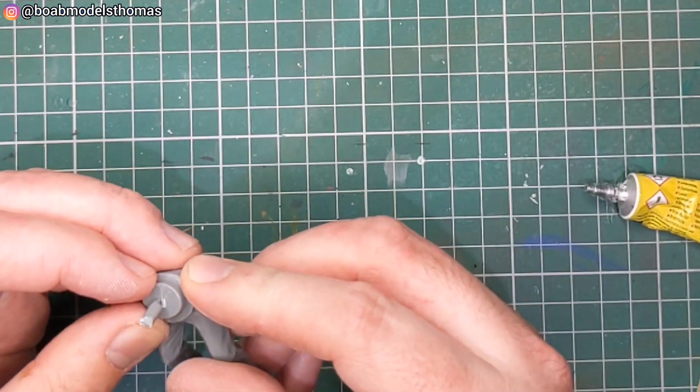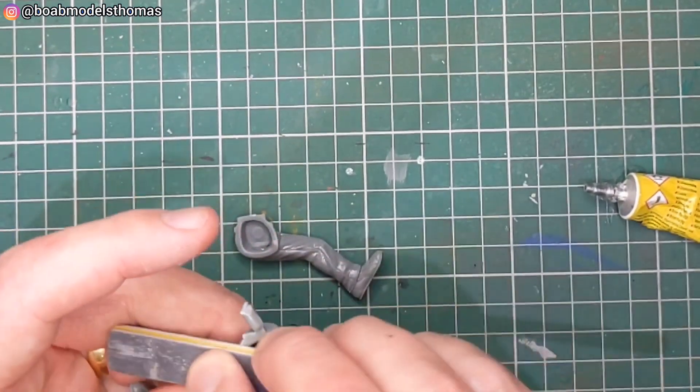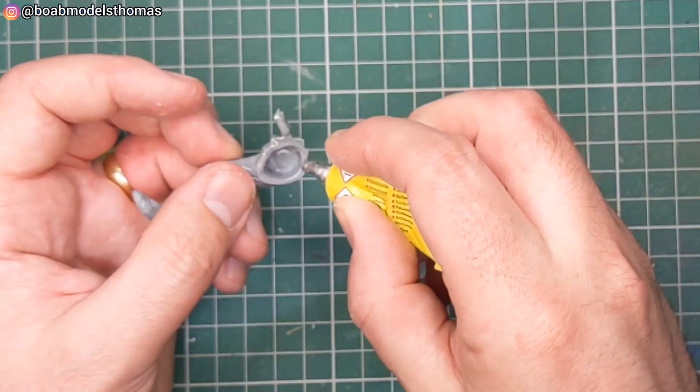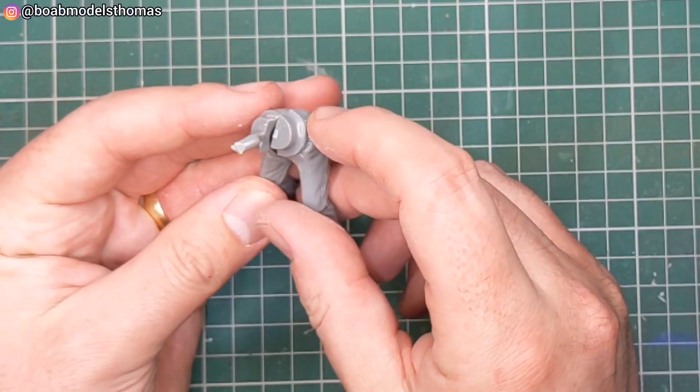Then we move on to figure B here. I found that these seams went together a little bit better if they were sanded and again I'm using the Humbrol Poly Cement.